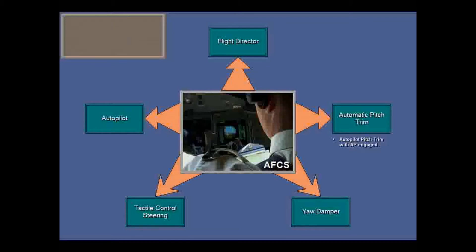There are two types of automatic pitch trim. The autopilot pitch trim function decreases mistrim forces on the control columns with the autopilot engaged, and the flap pitch trim decreases mistrim forces on the control columns with the autopilot not engaged and the flaps in transit between 15 and 35 degrees.